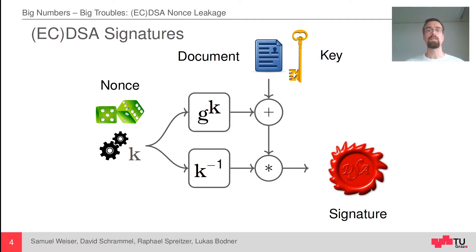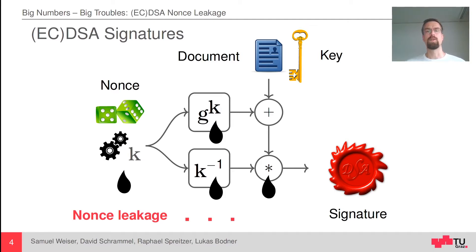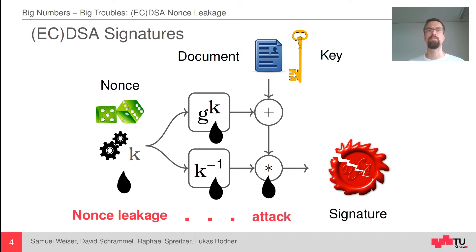What we did is we analyzed all of those steps with our DATA tool. And surprisingly, we found nonce leakage not only in the generation of nonces, but also in the exponentiation, in the inversion, and in the final multiplication — essentially in all computation steps. And if you combine the leakage which you found, you can mount a key recovery attack and break the signatures and retrieve the yellow key at the top.